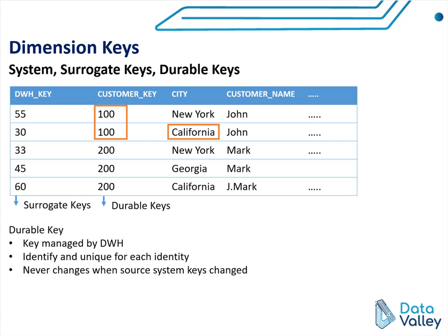The same example applies for another customer. Here we have customer key 200: the first change was in the city value, and the second change was in the city value and the customer's first name. However, we still have the same customer key.